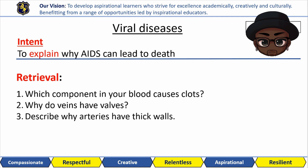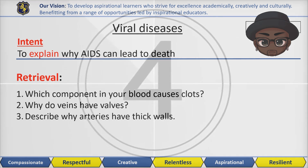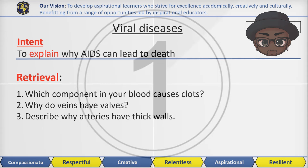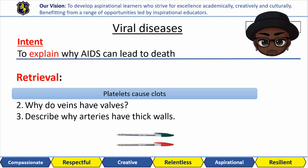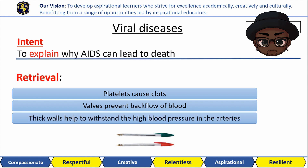Here are the retrieval questions for this lesson. You know what to do. Platelets in your blood are the reasons for scabs and blood clots. Valves in your veins and your heart prevent backflow of blood, and the walls of your arteries are thick to withstand the high blood pressure within them.